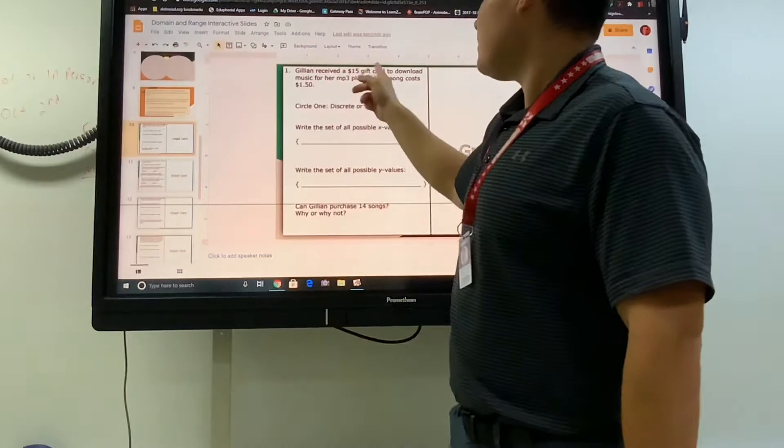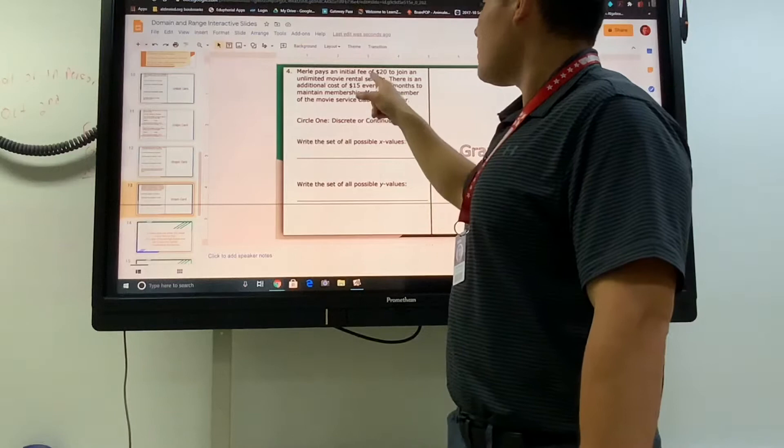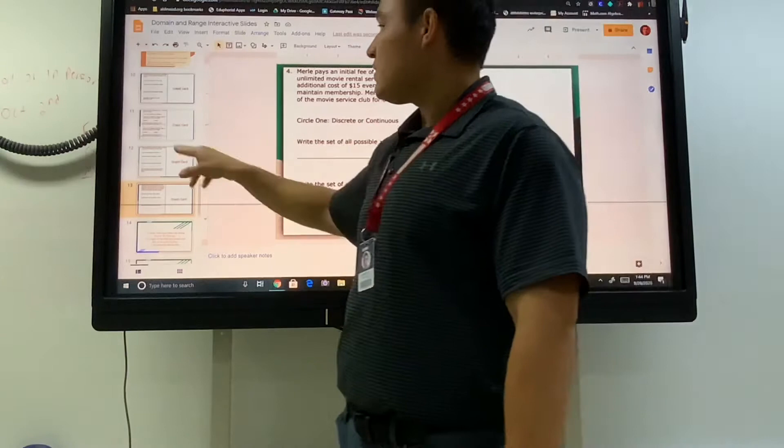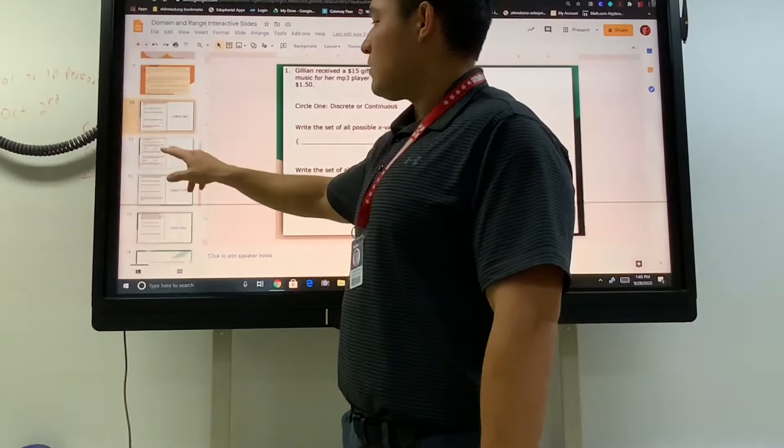Let's see if anything else uses the same numbers. This one says the trail is a $20 starting fee, so that's going to be the y-intercept, and then $15 every two months. For this graph that I've highlighted, it started at 20, so it's not the one about downloading songs.